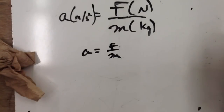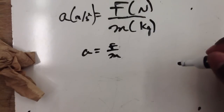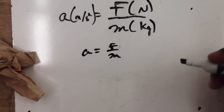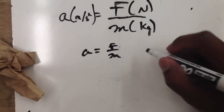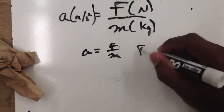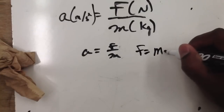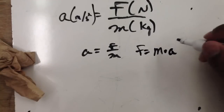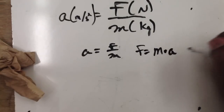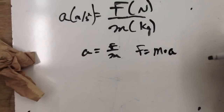We can write this equation in different ways because there are three variables, so we can write it in terms of each variable. If we wanted to write it in terms of F, for example, we could say F is equal to m times a. This dot just means multiplication, or you might see it written as just 'ma' — when you have two variables next to each other, you know it means multiplication.